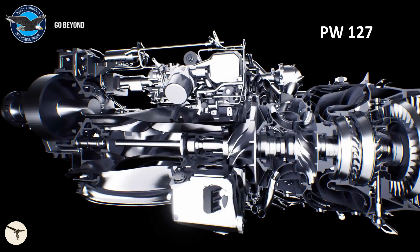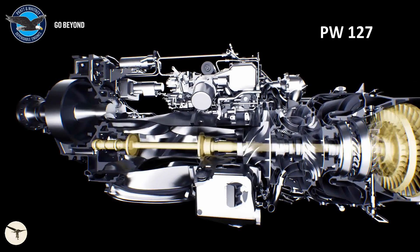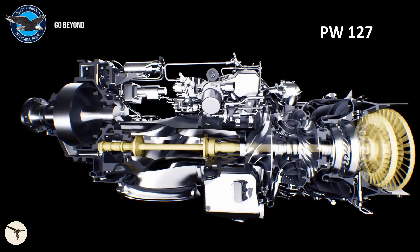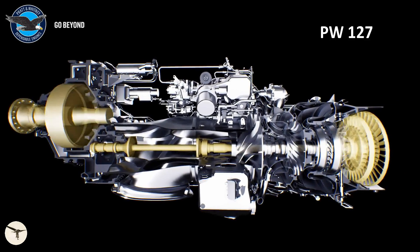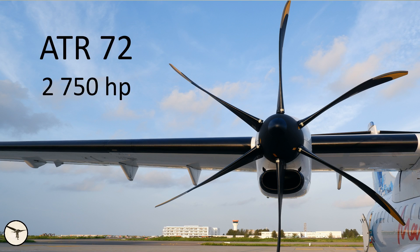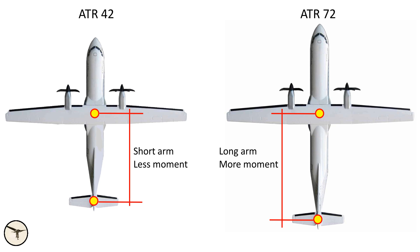Both variants use the same engine, the Pratt & Whitney Canada PW-127. When the engine is installed in the ATR 72, it develops 2,750 horsepower. When the same engine is installed in an ATR 42, it is derated to 2,400 horsepower. The reason is that the shorter fuselage makes the rudder less effective. If the engine had developed more power, VMC would have been too high.